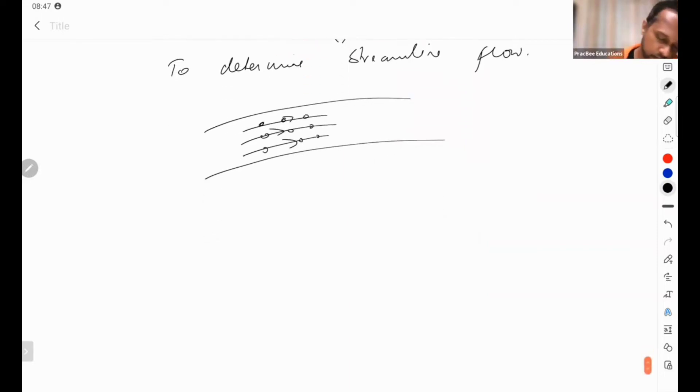Then there is another flow stream, this is streamline, then there is iska ulta hota turbulent, you must know. Ye particle idhar chala gaya, either wala particle idhar aa gaya, so that is turbulent flow.